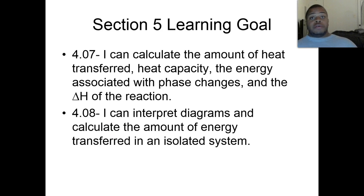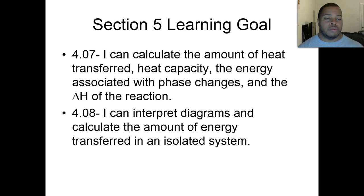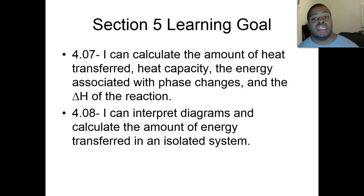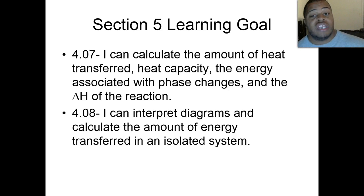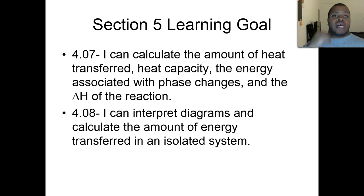We've made it to our final section of this unit. We're going to look at a couple of different goals, and this is where the calculation is going to come in — a little bit of math, but usually based on similar formulas so we can plug and chug our way through. Goal 4.07: I can calculate the amount of heat transferred, heat capacity, the heat capacity of a substance, the energy associated with phase changes, and the delta H of a reaction. Goal 4.08: I can interpret diagrams and calculate the amount of energy transferred in an isolated system. That's going to bring in the idea of calorimetry and how we'll use it through the lab after the break.